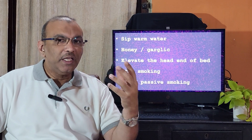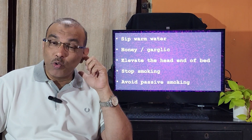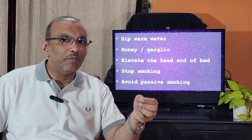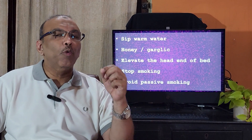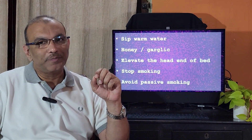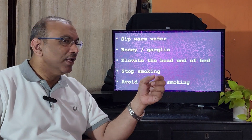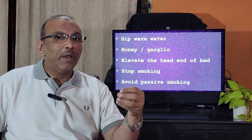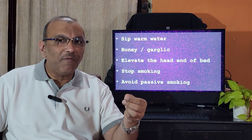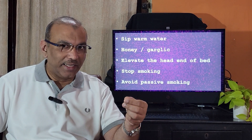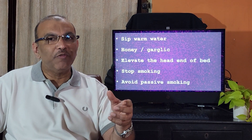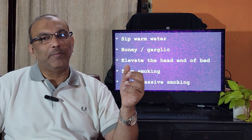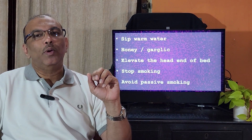Once cough starts, it can slowly become a habit. To prevent that, before the onset of cough take sips of warm water - that helps a lot. If the cough is prolonged, herbal remedies like half a teaspoon of natural honey can do good. As an alternative, you can take one small pea-sized piece of garlic, chew it, and swallow it. These are natural herbal remedies.